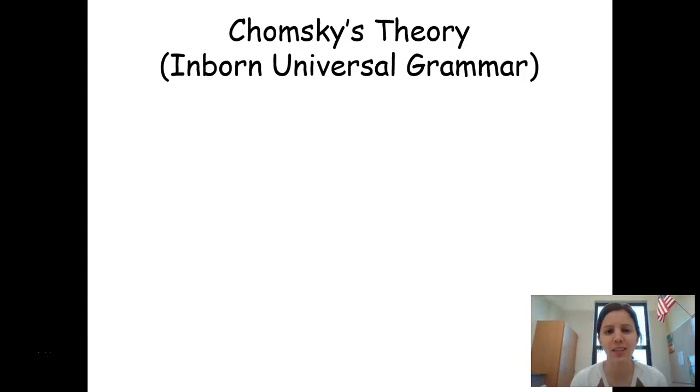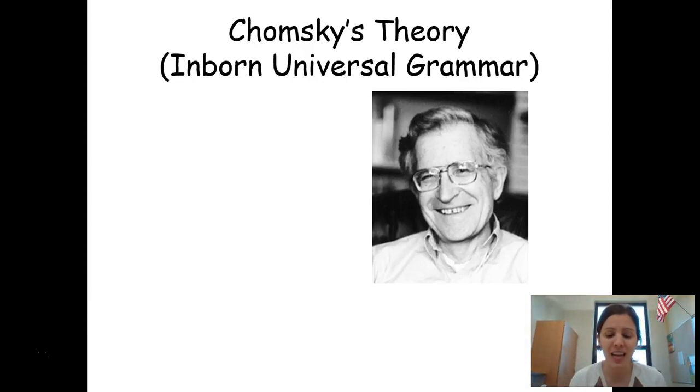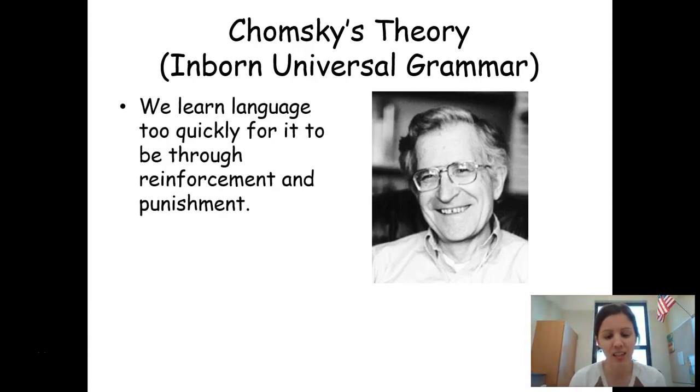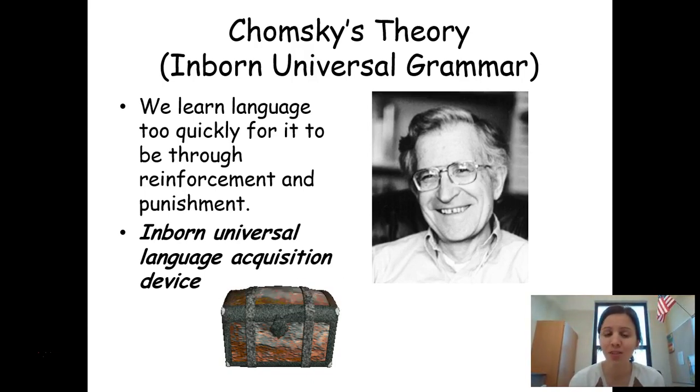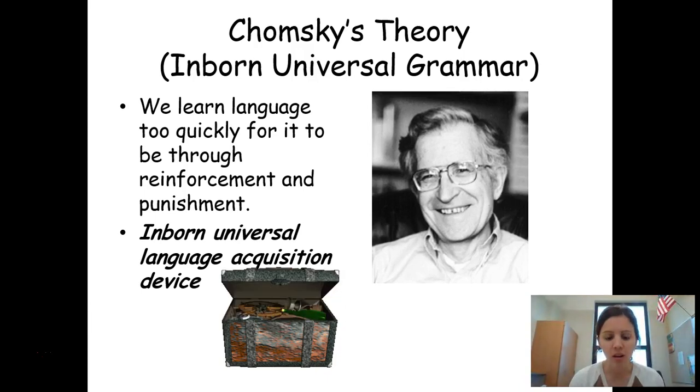The second theory is called the Inborn Universal Grammar Device Theory. And this is from a psychologist named Noam Chomsky. He's actually still alive today. And so he takes the nature view of learning language. And he says that we learn it too fast for it to just be through reinforcement and punishment. He says that we have this device within us or this genetic code within us that allows us to learn language. And he called this the Inborn Universal Language Acquisition Device. And his evidence for this was that if you take a bunch of kids and you put them all together when they're young, they'll actually develop their own language. All languages have the same building blocks. They all have nouns. They all have verbs. They all have adjectives. So there must be something very genetic about that, that all our languages have those building blocks. He said that when children are learning languages, they learn them in very predictable patterns. They'll learn nouns first and then verbs and then adjectives. And so all that spans culture. And so he's saying that there's got to be something inborn within our nature that allows us to do this.